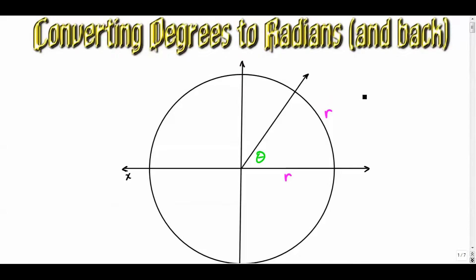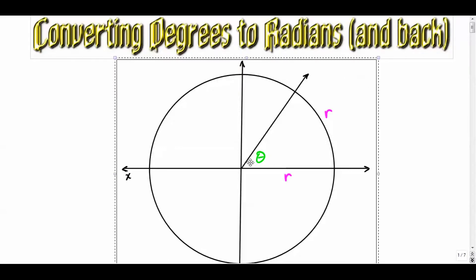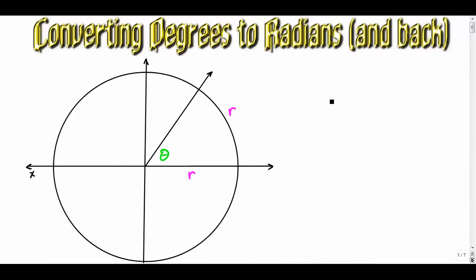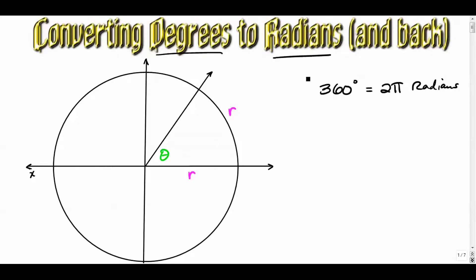Let's do some conversions — converting from degrees to radians and radians to degrees. It's a pretty important skill; it's not very difficult but it is important. If you watched my last video on what a radian is, you saw some of these basic ideas: 360 degrees is a full revolution of a circle, and that's also equal to two pi radians. These are two different ways to measure angles.